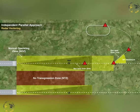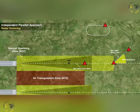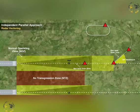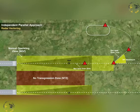Radar monitoring shall not be terminated until visual separation is confirmed, the aircraft has landed, or in the event of a missed approach, is at least one nautical mile beyond the departure end and adequate separation exists. Aircraft commanders will not be told that a radar service has been terminated.